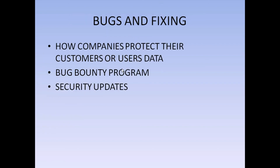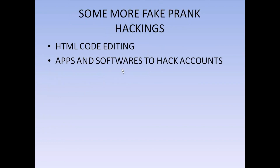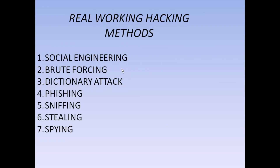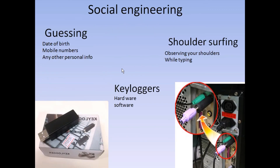The real hack method is E7. E7 is a good thing. The first technique is guessing. Guessing uses data like date of birth, mobile numbers, and hall ticket numbers as potential passwords.